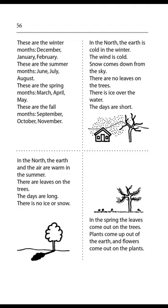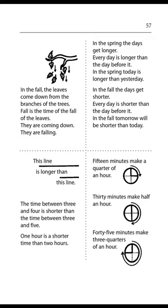Page 57. In the spring, the leaves come out on the trees. Plants come up out of the earth, and flowers come out on the plants. In the fall, the leaves come down from the branches of the trees. Fall is the time of the fall of the leaves. They are coming down. They are falling.